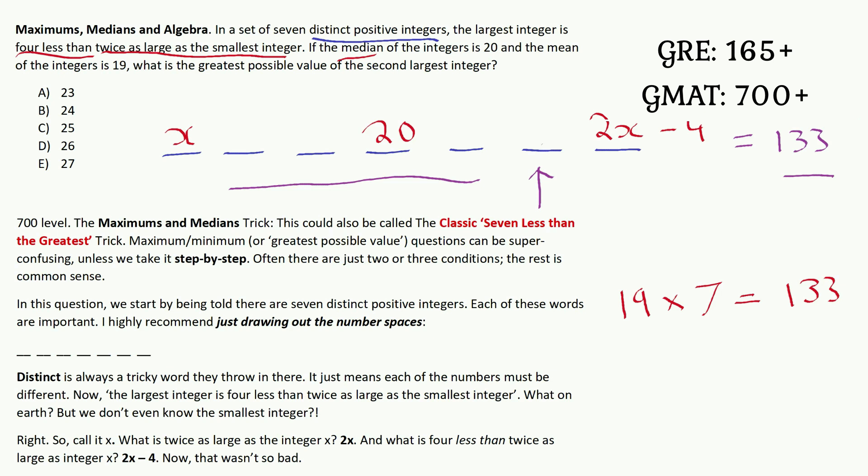So our job, when the question says make the second largest integer as big as possible, make it great again, so to speak, we're going to minimize all the other integers. How do we do that? Well, what's the smallest that integer number two could be? Well, we know that the smallest integer in this set is x. So it can't be any smaller than x, otherwise this second number would be the smallest.